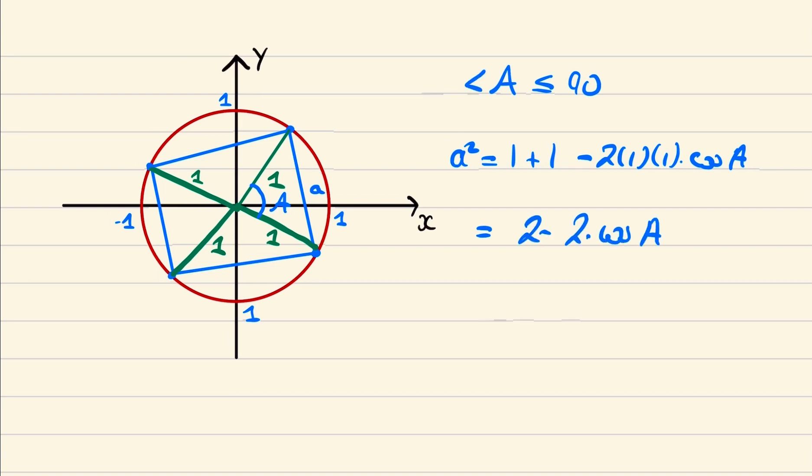And given that the angle A lies between zero and 90 degrees then cos of A will always lie between one and zero and hence a squared will always be less than or equal to two and so we must conclude that a will be always less than or equal to root two.